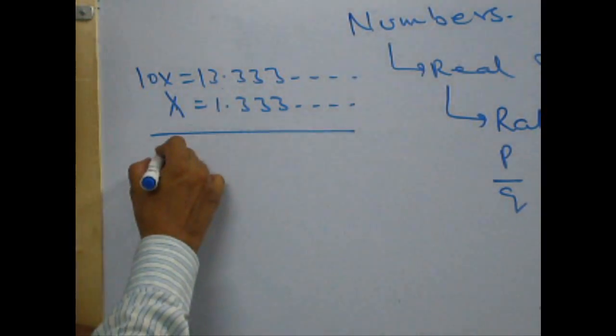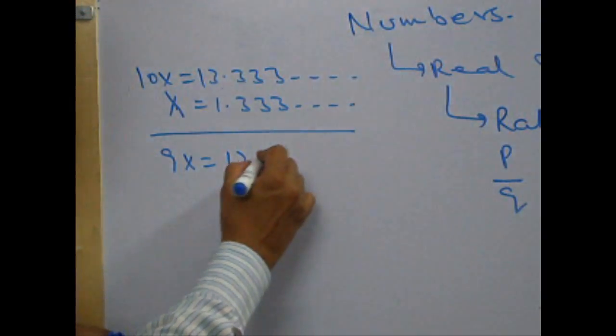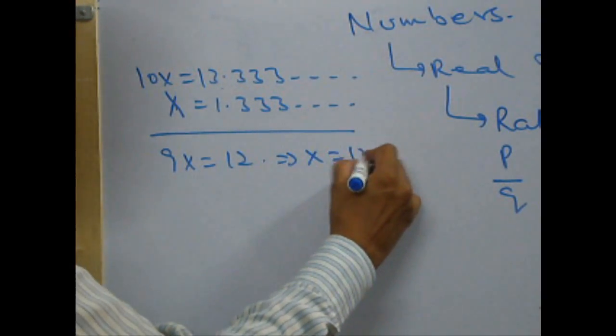Now, subtracting x from this, I will have 9x as 12 and therefore, x as 12 by 9.